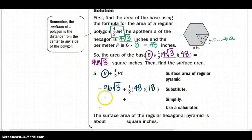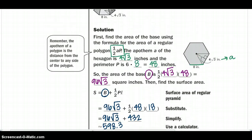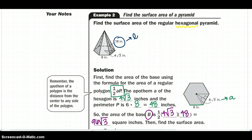All righty, so if we simplify, we're going to keep 96 square root of 3 plus we would get 432. Putting those both together, we would get approximately 598.3 square inches would be our surface area of this hexagonal pyramid.